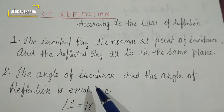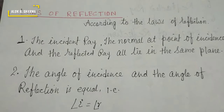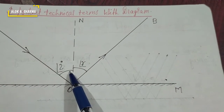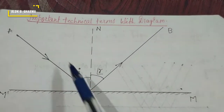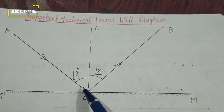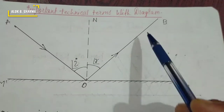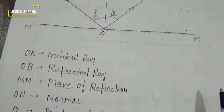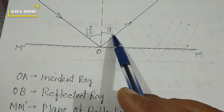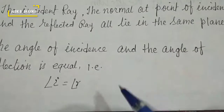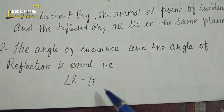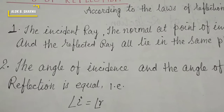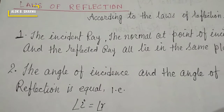The second law states that the angle of incidence is equal to the angle of reflection — that is, angle i equals angle r. The angle which the incident ray makes with the normal always equals the angle the reflected ray makes with the normal. In any case, angle i is always equal to angle r.